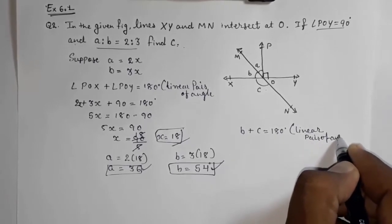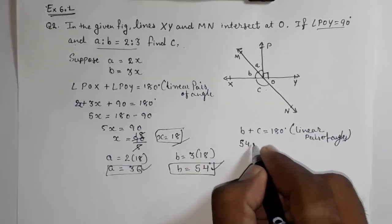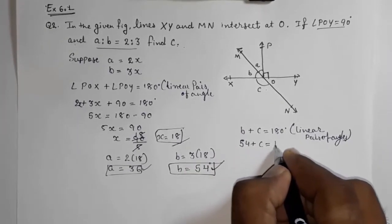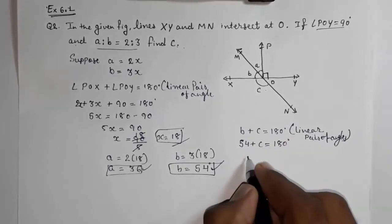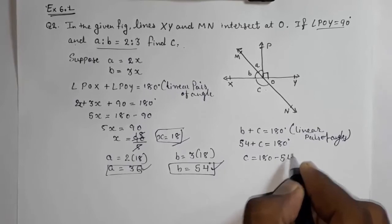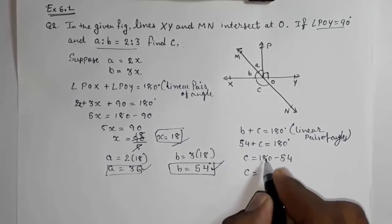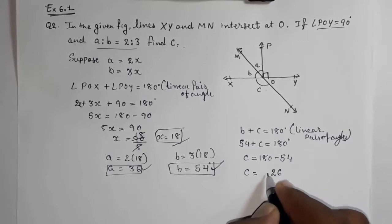So now b we had found out, 54 plus c that we want to find out, this is 180. C is equal to 180 minus 54, so c will be 126 degrees.